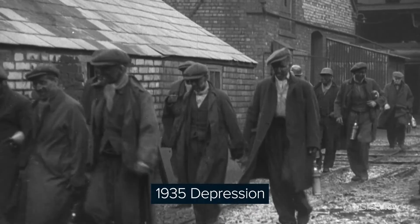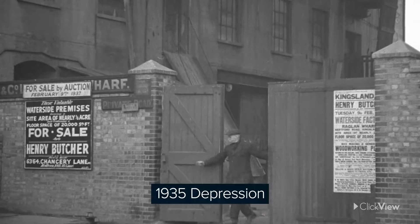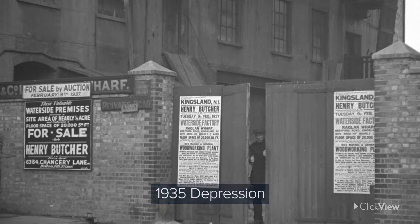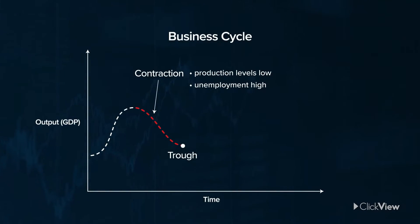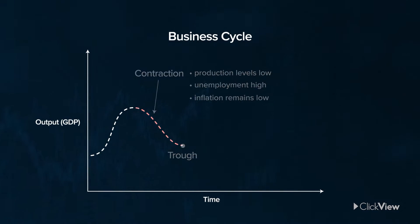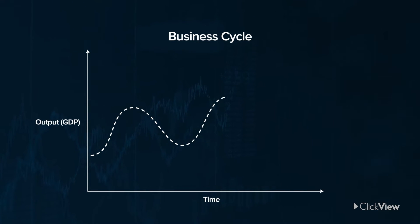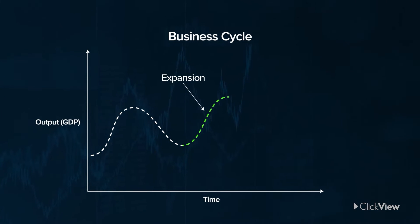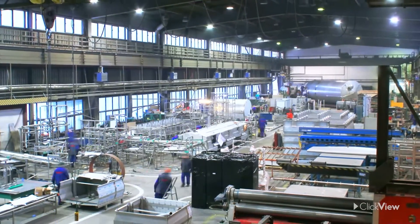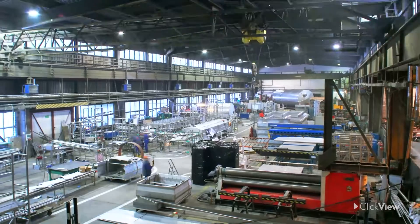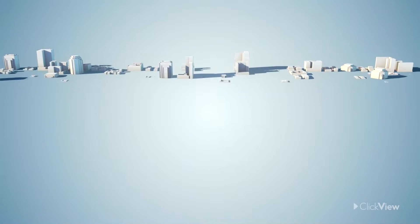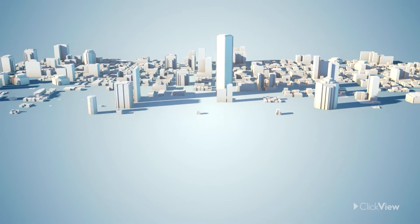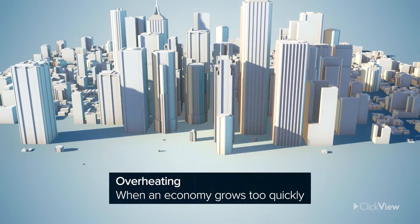A depression is a much more severe version of a recession. The decline in GDP is longer and the accompanying unemployment is higher. The economy continues to contract until the business cycle hits the trough. While falling production and high unemployment occur during economic contraction, inflation tends to remain low. An increase in aggregate demand signals the expansion in economic activity and production. Economies are said to boom when they go into an expansion phase, continuing until they reach a peak, at which point employment levels are high and businesses operate with production levels at or approaching capacity.